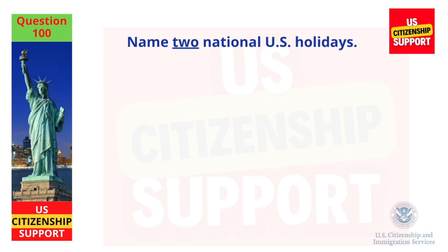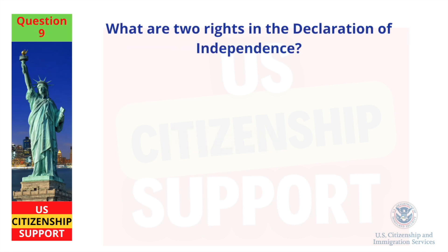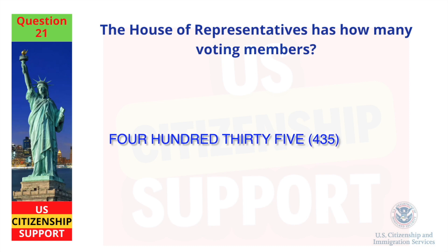Name two national US holidays. Christmas Day, President's Day. What are two rights in the Declaration of Independence? Life, Liberty. The House of Representatives has how many voting members? 435.